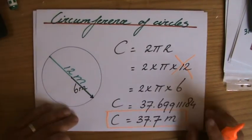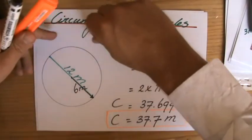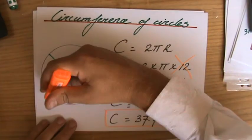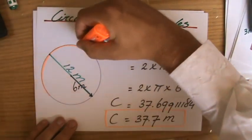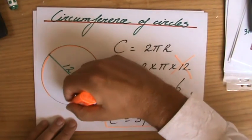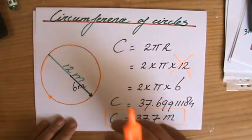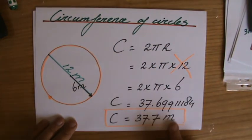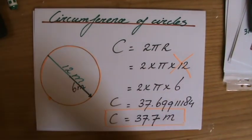diameter of 12 meters, and if I have a measuring tape and put that measuring tape on the outside of my circle all around, then I need a measuring tape of 37.7 meters. There you go.